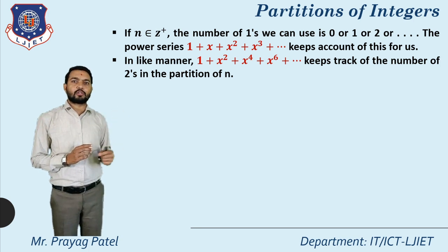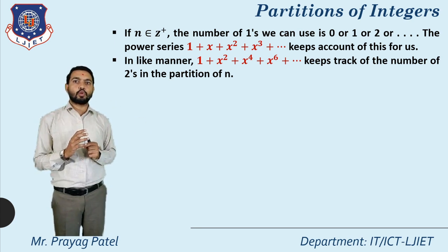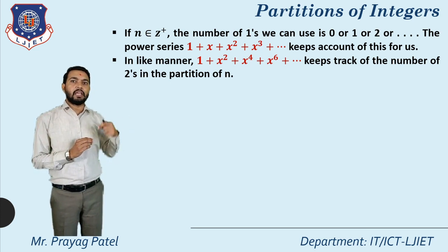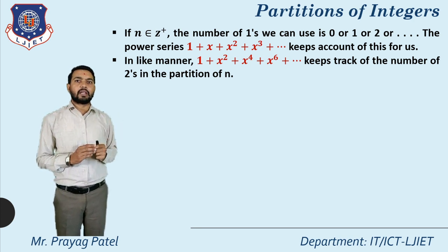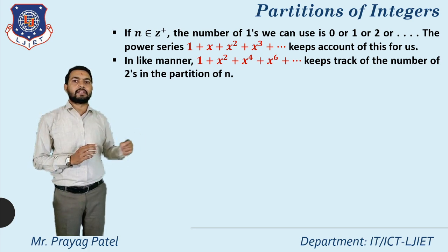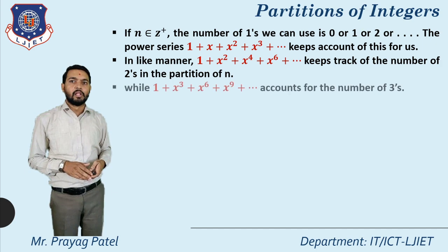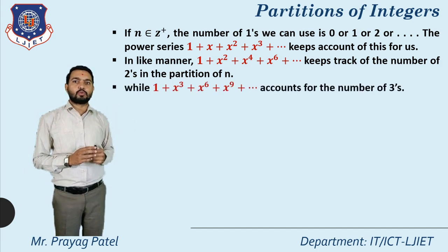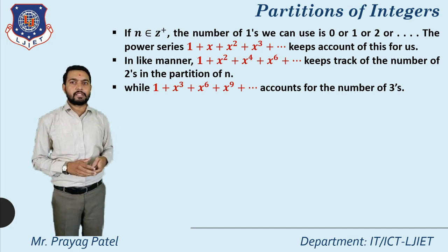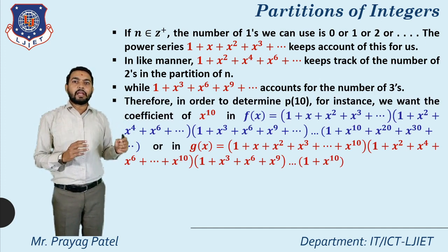The first series 1 plus x represents ones repeated, increasing x's power by 1. If we increase x's power by 2, then 1 plus x² plus x⁴ plus x⁶ plus x⁸ represents the number of twos. Similarly, 1 plus x³ plus x⁶ plus x⁹ represents the number of 3s, increasing x's power by 3. For 4, we write 1 plus x⁴ plus x⁸, and so on.